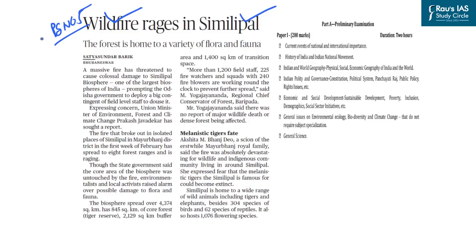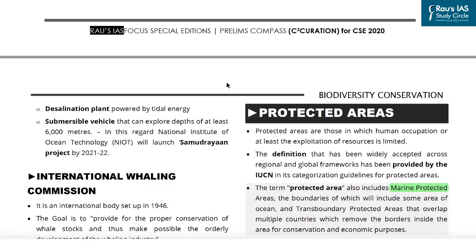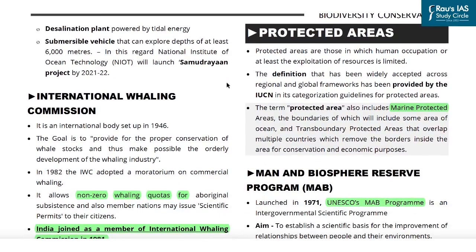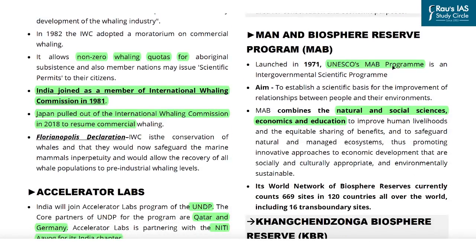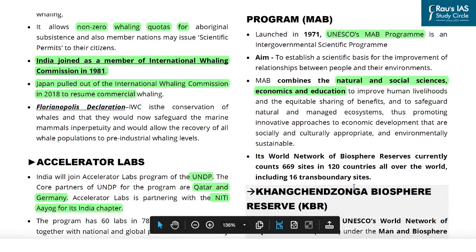The next article relates to a wildfire that has started in the Simlipal Biosphere Reserve located in the Indian state of Odisha. Various aspects related to the Simlipal Biosphere Reserve are important from the prelims examination perspective under the topic of environment and ecology. In the Prelims Compass of 2020, we discussed different protected areas in India including the UNESCO Man and Biosphere Reserve Programme, which was launched back in 1971. UNESCO currently recognizes about 669 sites under its World Network of Biosphere Reserves.